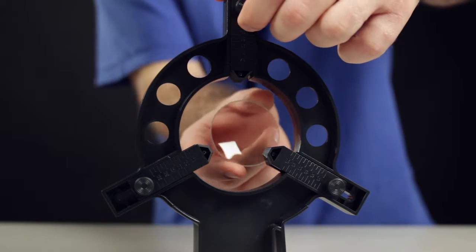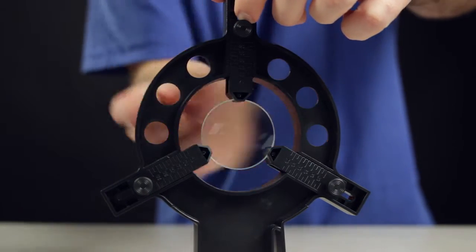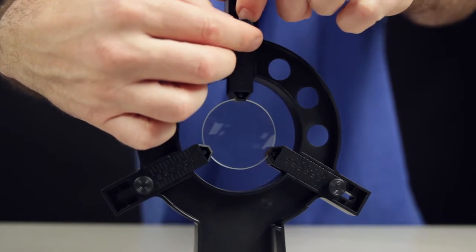Next, loosen the thumbscrew on the top arm and slide it up. Rest the edge of the lens on the lower two arms and slide the top arm down, tightening the thumbscrew to secure it and the lens in place.